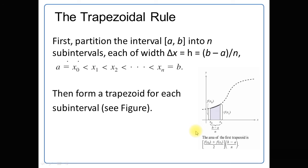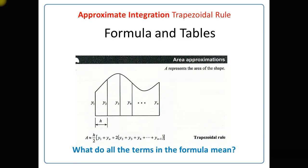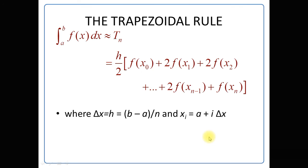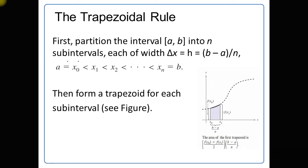The area of a trapezoid figure is given by the formula: (a + b) / 2 × h — that is, the sum of the lengths of the parallel sides divided by 2, multiplied by the width of the trapezoid. This is the single trapezoid area. So the area of one trapezoid is [f(x₀) + f(x₁)] / 2 × h, where h = (b − a)/n and n is the number of subintervals.